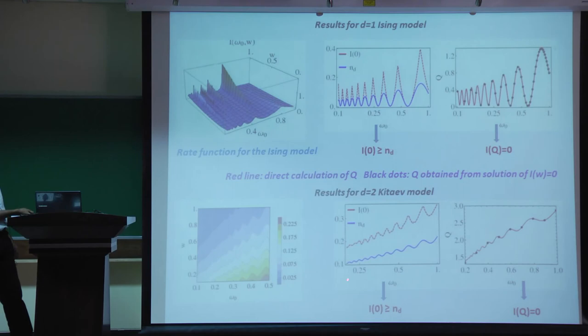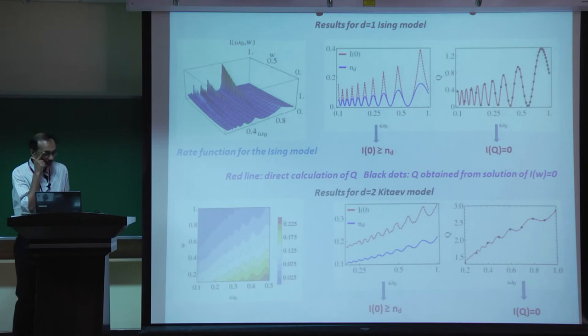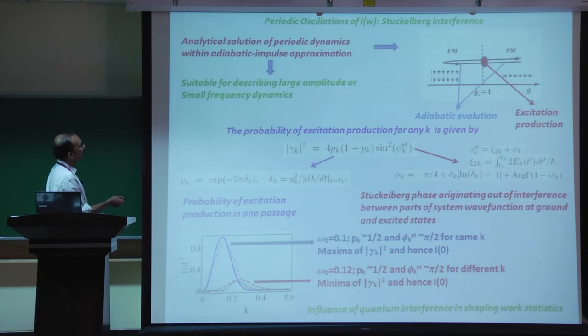There are experimental proposals for measuring the characteristic function, from which the work distribution can be constructed - this might be a good way of getting Q. Similar results hold for the d=2 Kitaev model, where the only difference is that the system passes through a gapless line instead of a gapless point, so more excitations are formed.